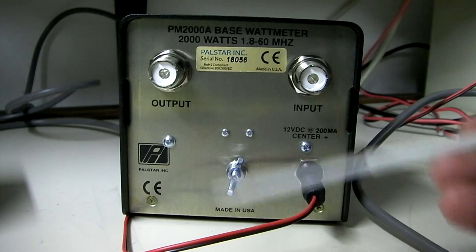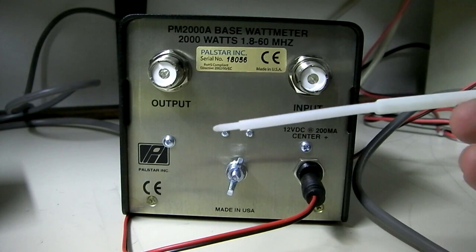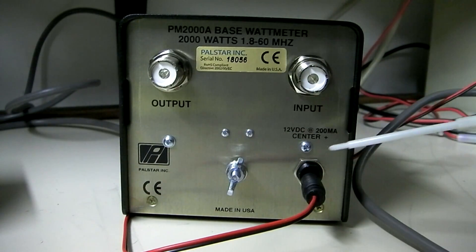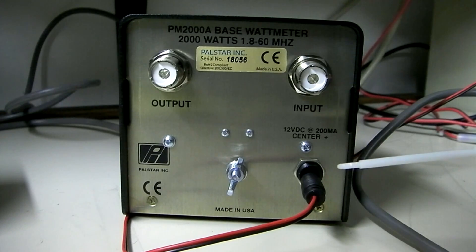A little disappointed it didn't come with a wall wart just to plug directly in the AC. You do need your own 12-volt DC source. If you're going to use it in the mobile, obviously you can just wire into your vehicle's electrical system.